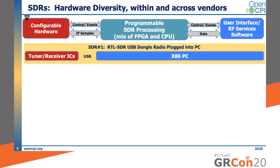Our first example is what is perhaps the smallest and cheapest SDR, the RTL-SDR USB dongle radio, which consists of some configurable tuner receiver hardware that plugs into a PC. It has no FPGAs and all the SDR processing as well as user interface software runs on the PC.